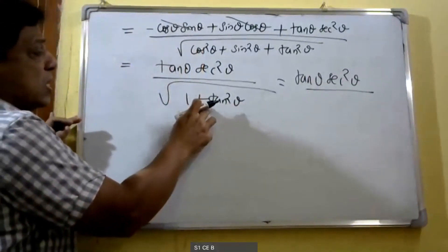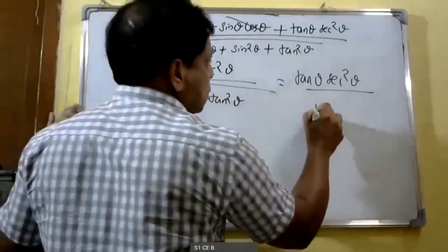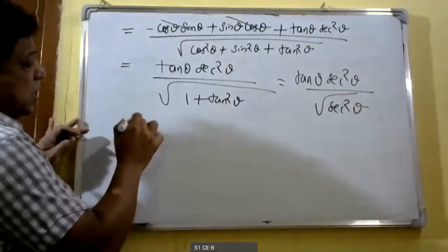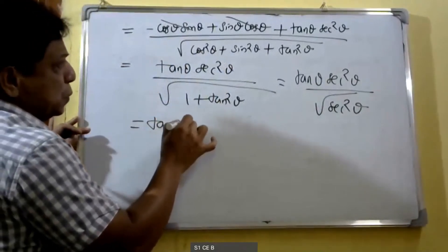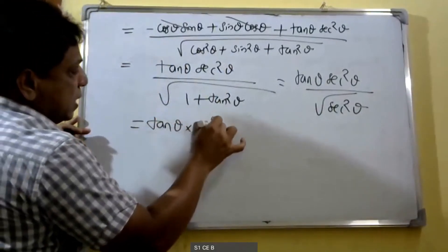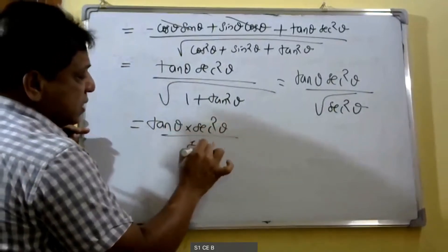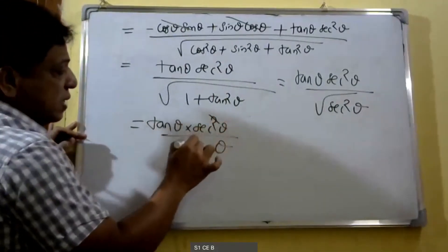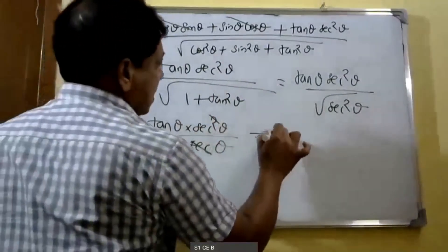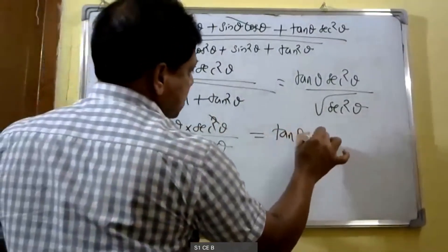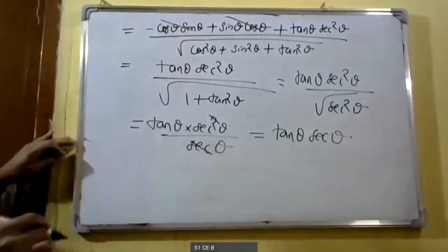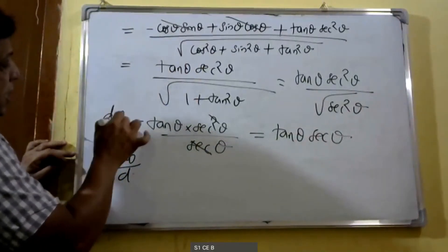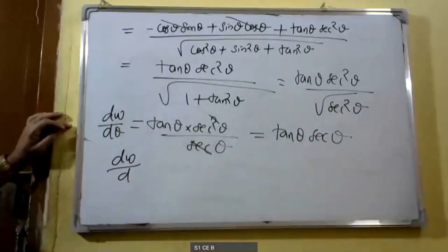So 1 + tan²θ = sec²θ, and √(sec²θ) = sec θ. Therefore dw/dθ = tan θ·sec²θ / sec θ. Canceling one sec θ, we get dw/dθ = tan θ·sec θ.